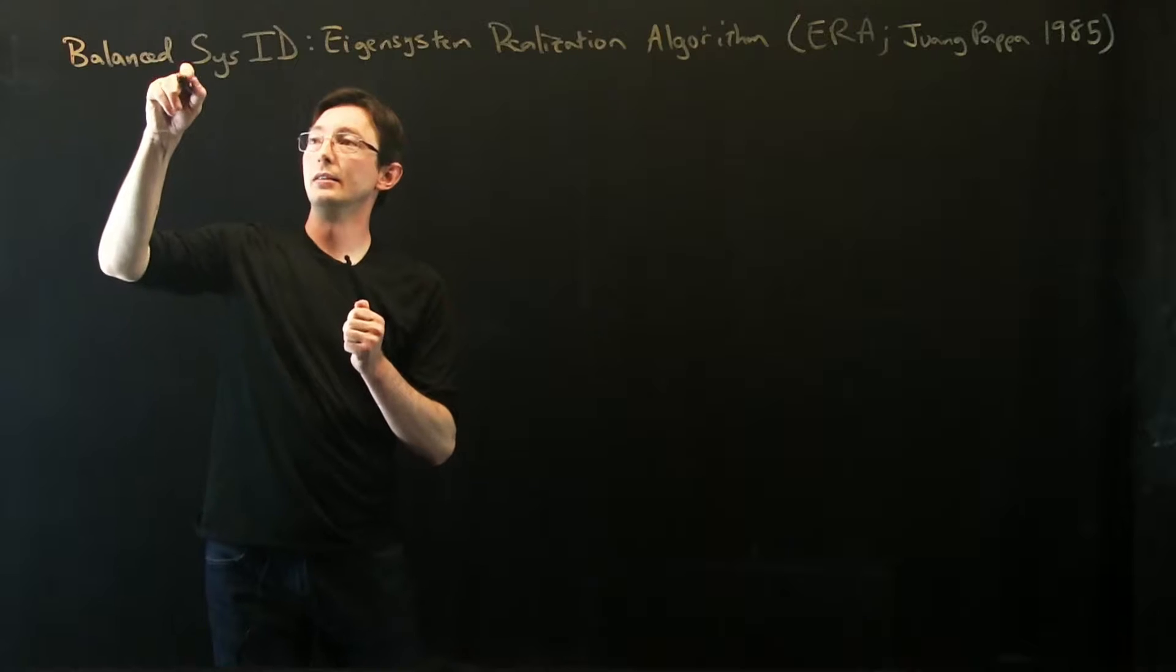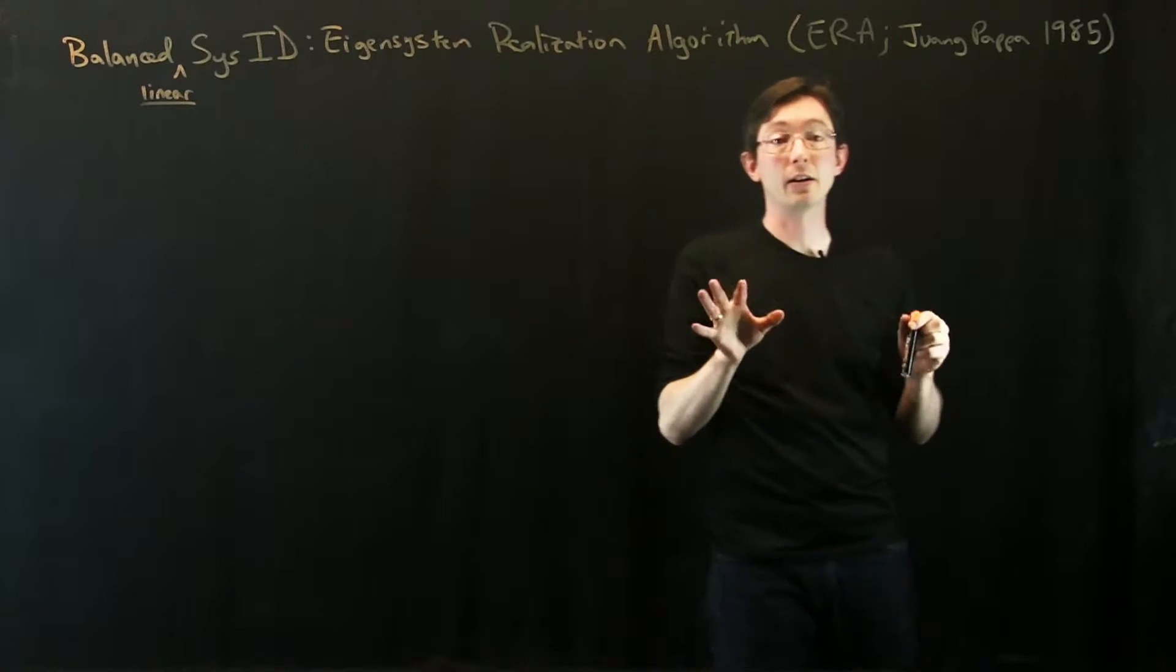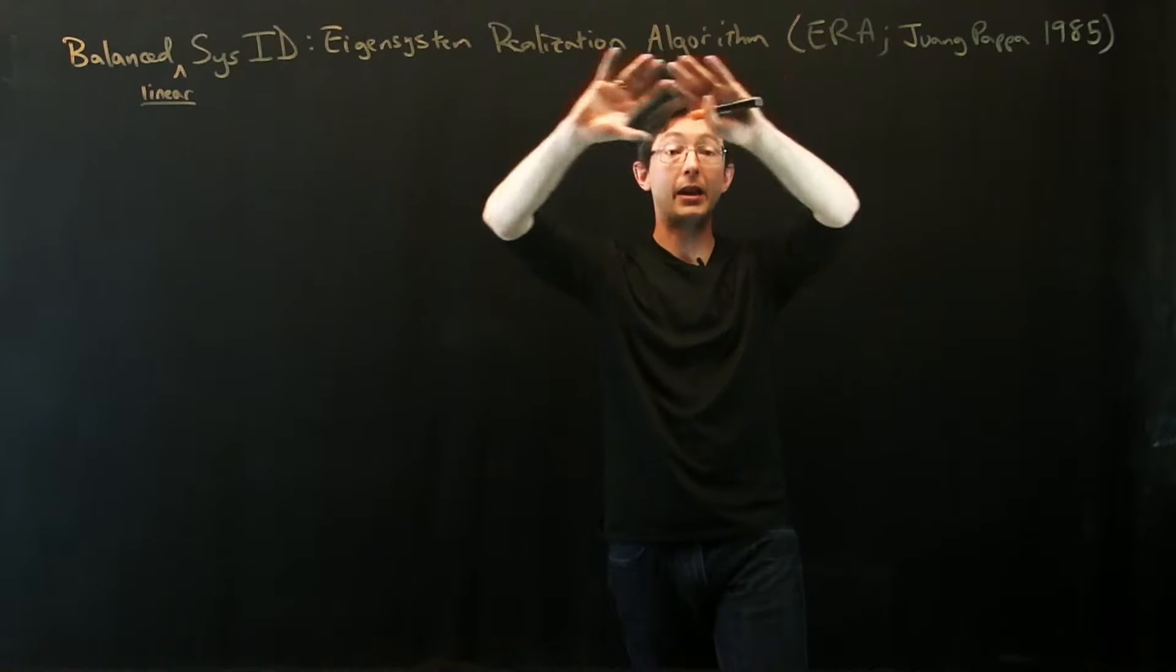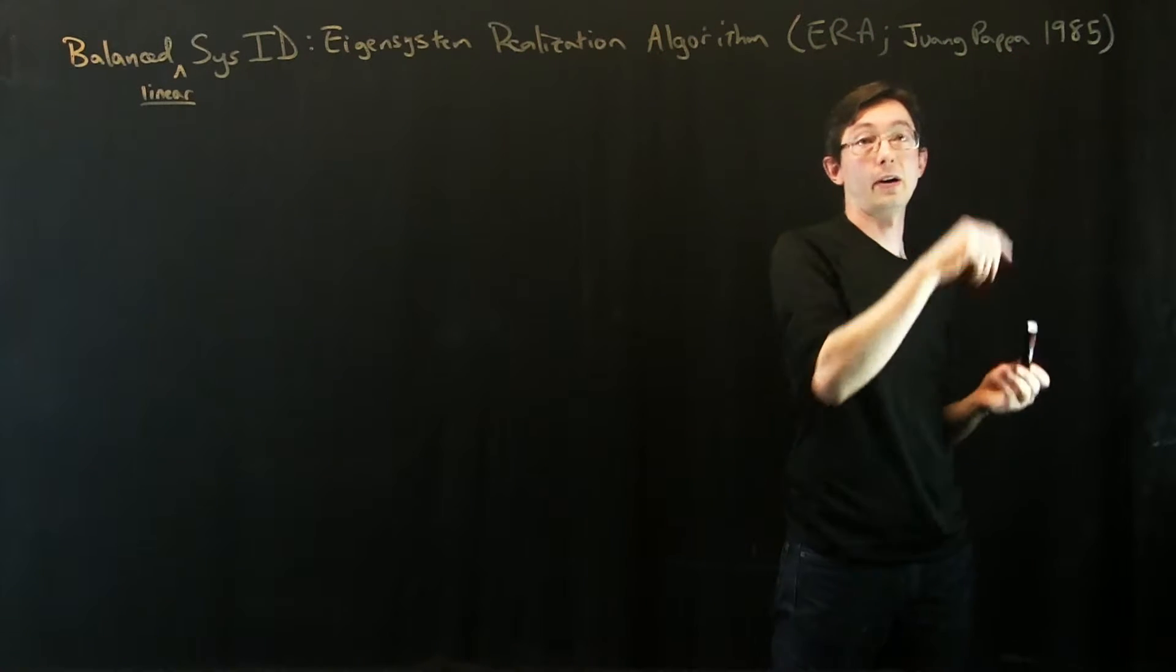This is linear system ID. I'll tell you all about nonlinear system ID later. Super powerful stuff, kind of modern method based on machine learning. But my go-to linear system ID method is the eigensystem realization algorithm from Juang and Pappa.